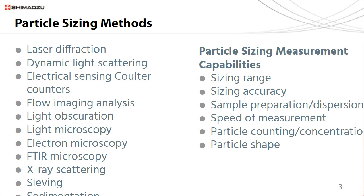Additionally, do you need to measure particle size only, or other particle features such as the concentration of particles, or perhaps shape or composition of the particles present? Today I'll be focusing primarily on laser diffraction techniques, as it's one of the fastest and most convenient ways to get accurate size distributions. I'll quickly explain the principle of how it works and discuss its inclusion in several USP standards, then give an overview of Shimadzu's product line of particle sizing instruments.